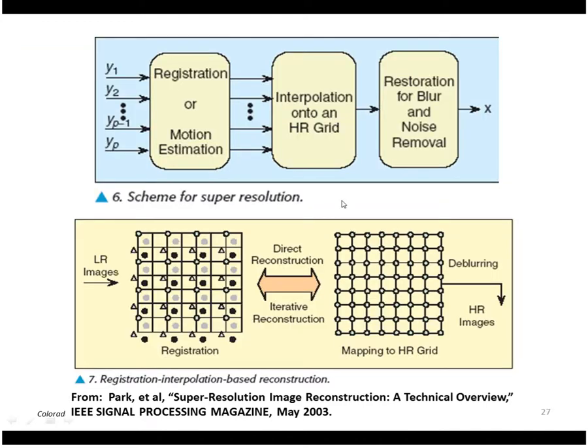So the process looks like this: we register our low resolution images together, interpolate them onto a higher resolution grid, and then restore it and do some noise removal.